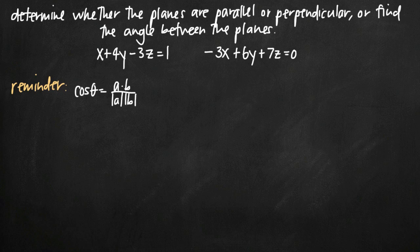Today we're going to be talking about how to determine whether two planes are parallel or perpendicular to one another, or if they're neither parallel nor perpendicular, how to find the angle between the planes. In this particular problem we've been given the equation of two planes: one is x plus 4y minus 3z equals 1, and the other is negative 3x plus 6y plus 7z equals 0.